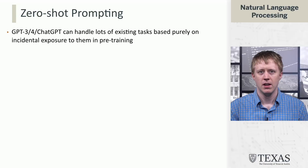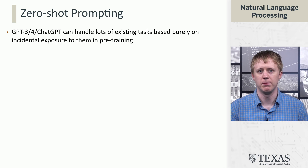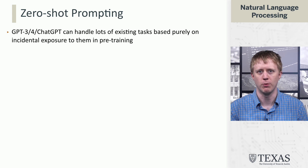In this segment, we're going to talk about zero-shot prompting, which is a way to get large language models to do various tasks for us just by giving them natural language instructions. This is a capability that we started to see with GPT-3, and then modern LLMs like GPT-4 and ChatGPT have really taken off with.